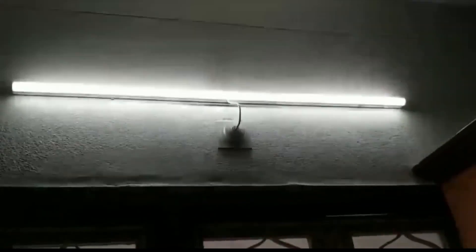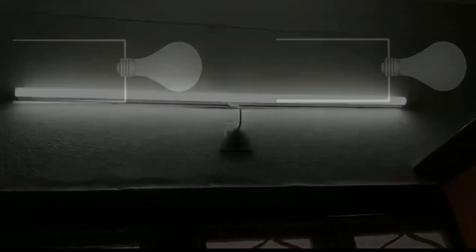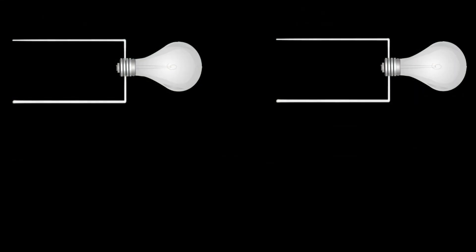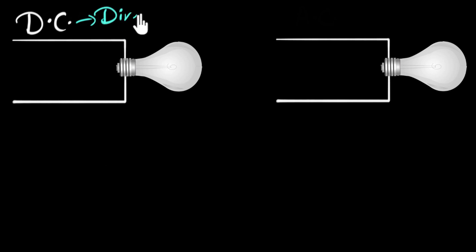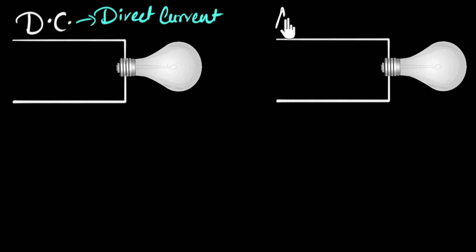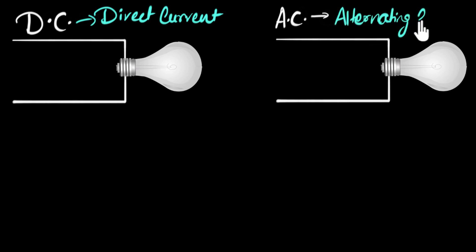To answer this question, in this video we will explore the two different kinds of electric current. Current comes in two flavors. One is called DC, which stands for direct current. And then the other one is called AC, which stands for alternating current.